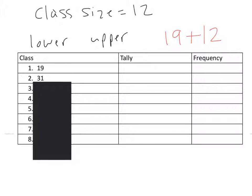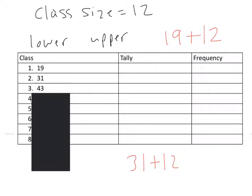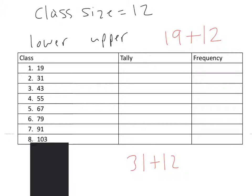I just continue on and add 12 to each number. I'm going to do 31 plus 12, going to get 43, going to add 12 to that, 55, and so on and so forth until I get to the bottom of my lowest limit of class 8.